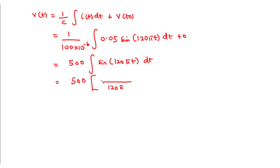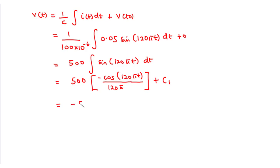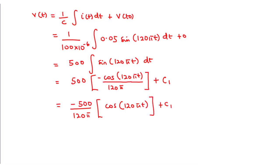Integrating sine gives negative cosine, so we have negative cosine of 120 pi t, plus a constant of integration C1 — note that this is not the capacitance, this is the constant of integration. Pulling the denominator outside gives negative 500 divided by 120 pi times cosine 120 pi t, plus C1. So basically this is v of t.